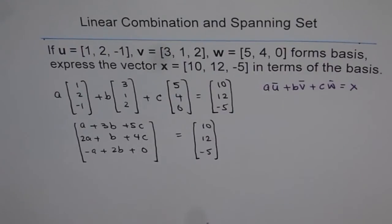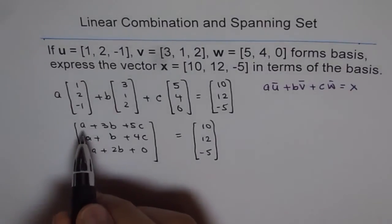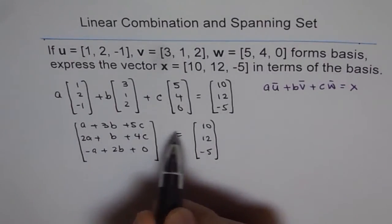is equal to this. So that is the matrix which we have, and now for these two vectors to be exactly same, their components should be same. So we get three equations, and our equations are a, plus 3b, plus 5c, equals to 10.